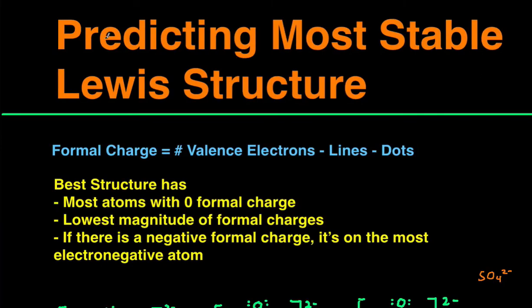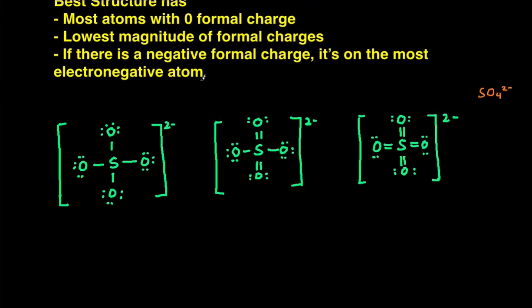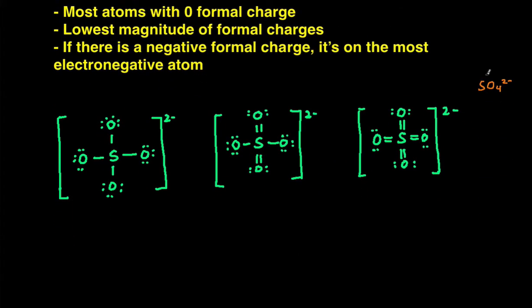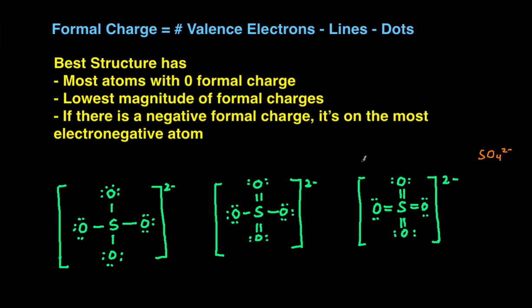Hey guys, this is Michael from Concord Chemistry. In today's video we'll be talking about how to predict the most stable Lewis structures. So if we're taking a look at sulfate, there are many possible Lewis structures for sulfate. I've drawn three of them right here. Of these three, let's predict which one is the best and or which one is the most stable.